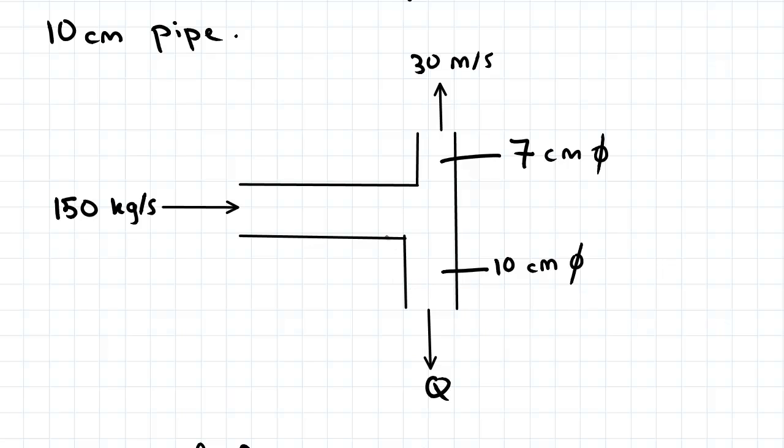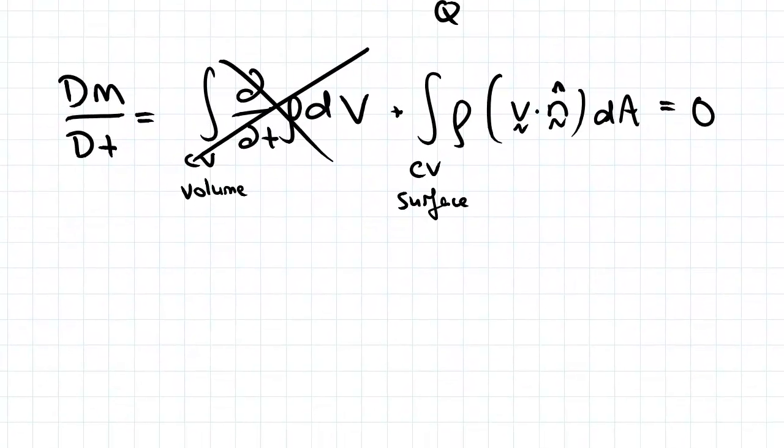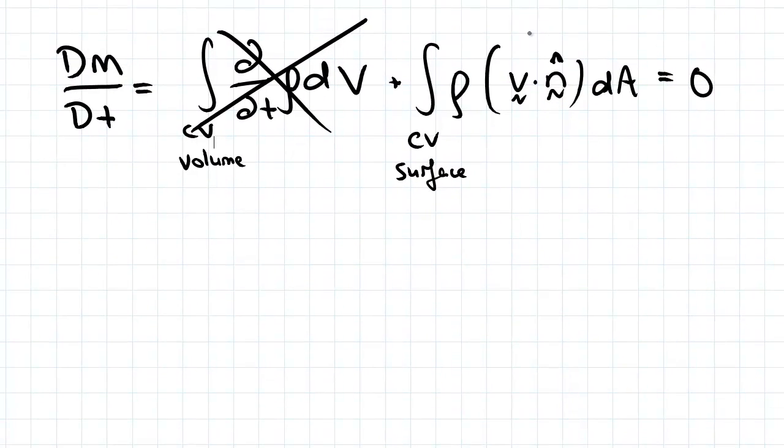So we start with our mass conservation equation. As always, since we're dealing with steady flow with constant density, we can cancel the first term here. So now we only have to deal with the control volume surface term on the right.